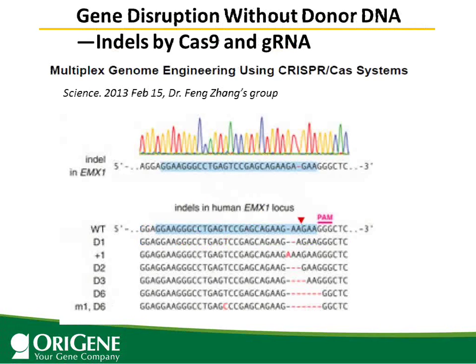Next I'll present some published data using CRISPR-Cas9. This paper was published in Science — two papers back-to-back — from Dr. Zhang's group at the Broad. The data shows gene disruption without donor template DNA. The sequence highlighted in blue is the target sequence. Without template DNA, the double-stranded break is joined together by non-homologous end joining, yielding different insertions, deletions, or mutations.